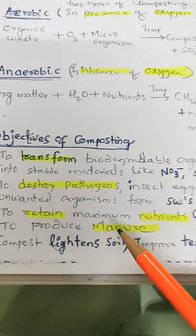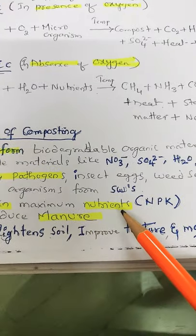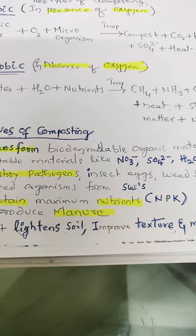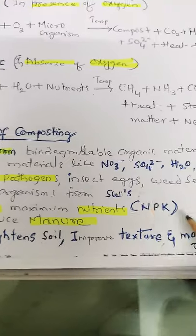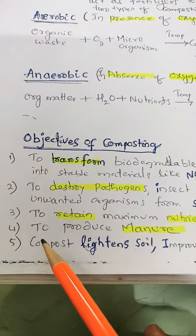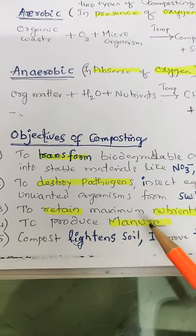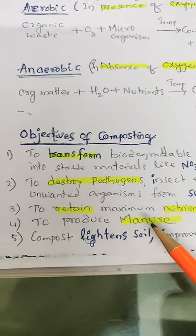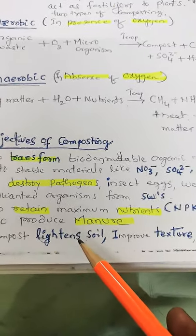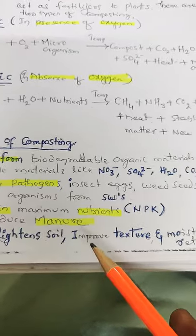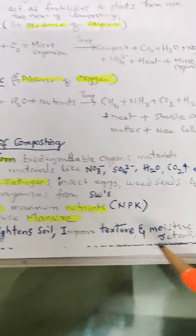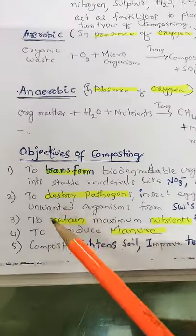Third aim: to retain maximum nutrients — that is nitrogen, phosphorus and potassium — all these should be retained. Fourth: to produce manure, which should be useful for the plants. Fifth: compost lightens soil, improves its structure and moisture retention. These are the main objectives.